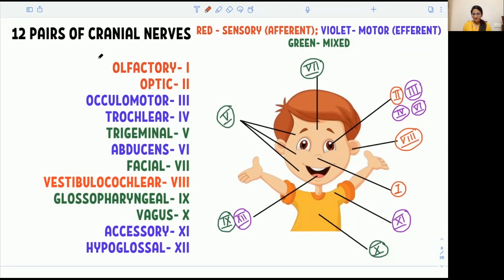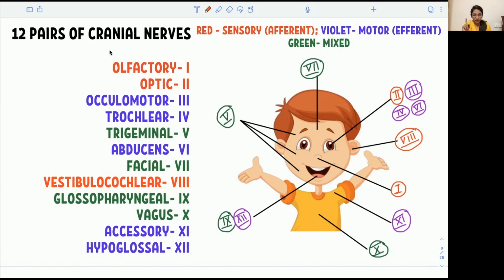Beginning with a story: on a Sunday evening, a couple were walking through a beachside and suddenly the girl sensed some weird smell. When she sensed the weird smell, the sensation went through her olfactory nerve, that is cranial nerve number 1.